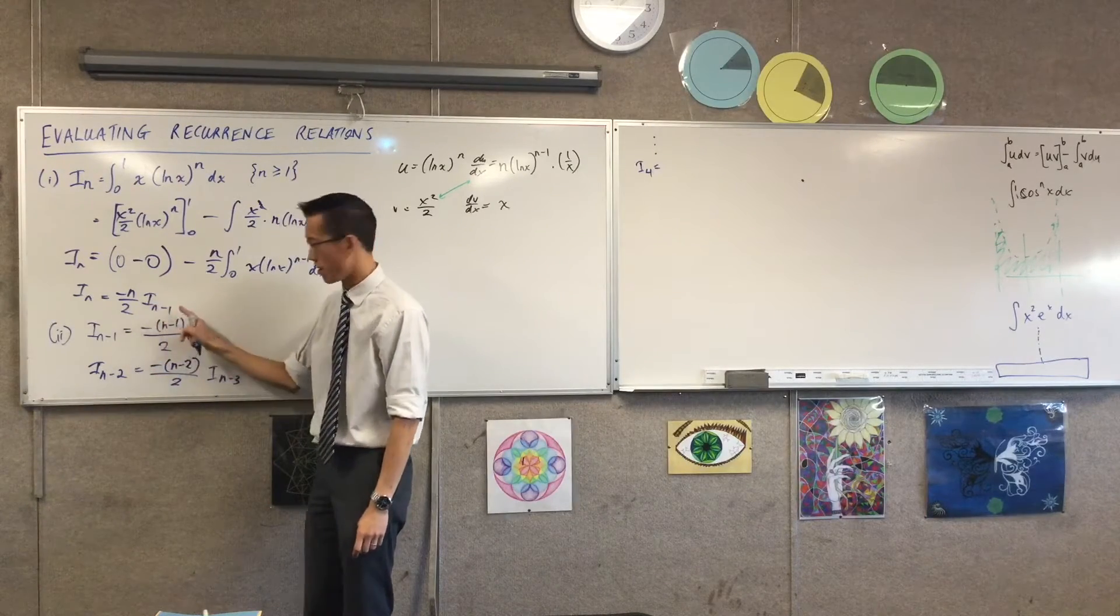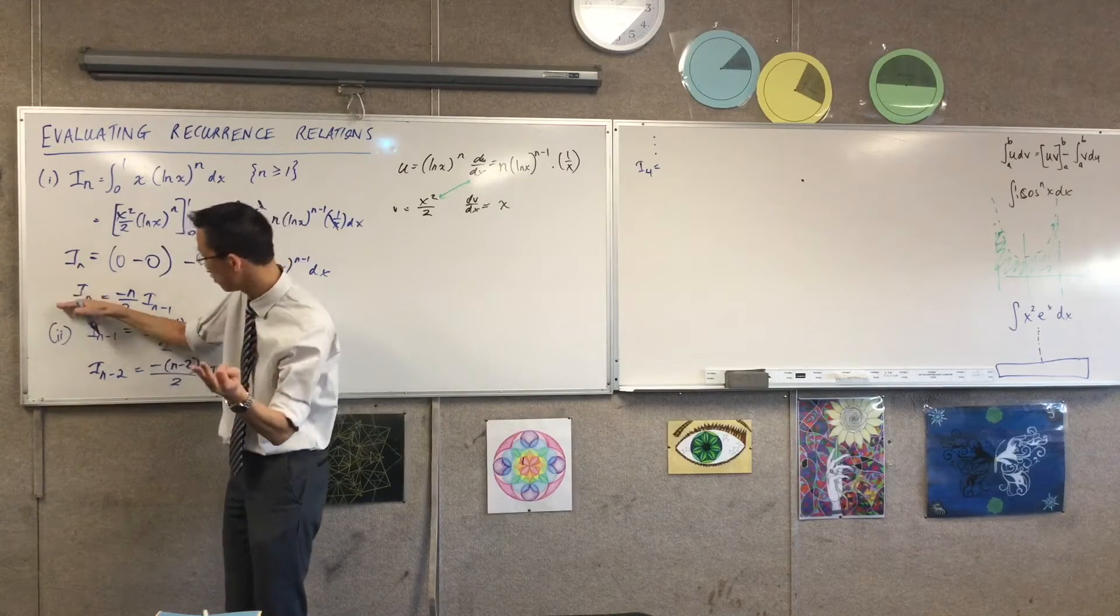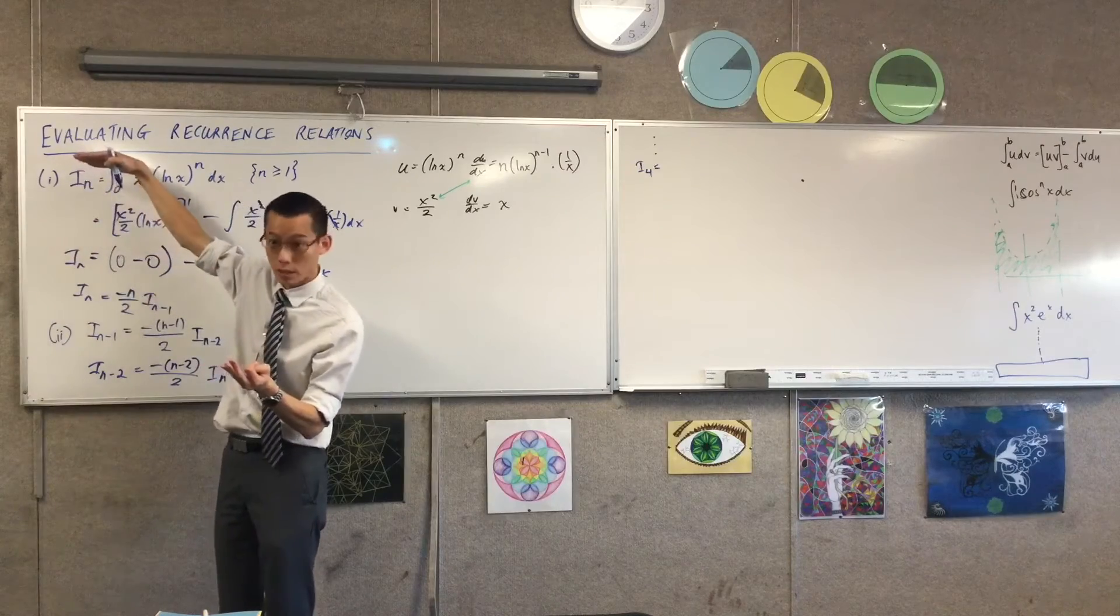If I want that to be I1, then the last one I write down will be I2. So to get three in total, I'll have two, three, and four. Does that make sense?